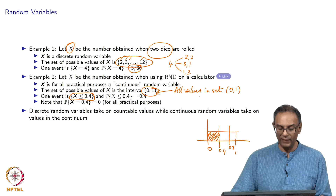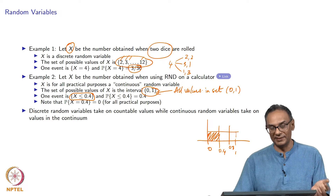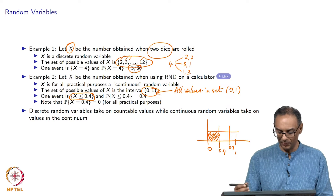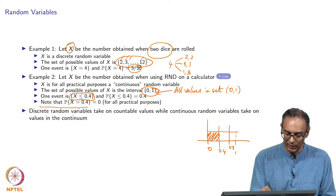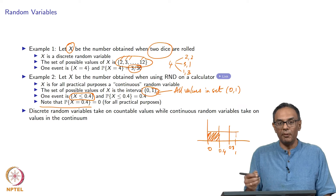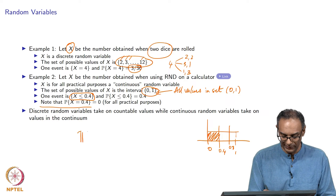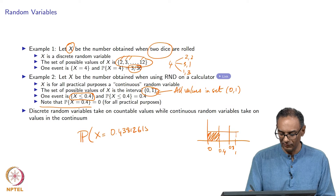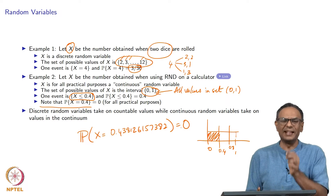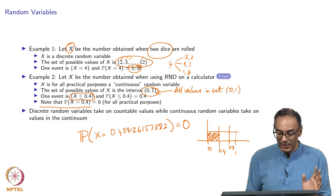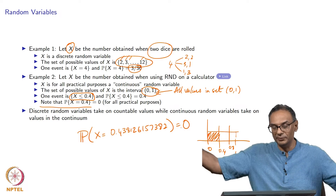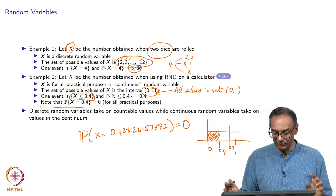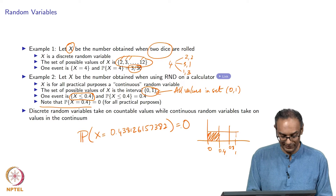An important feature of a continuous random variable is that the probability that it takes on a single value is 0. For example, the probability that x will be exactly equal to 0.438126157382 is 0. The chance you will get exactly that number is practically 0. In fact, it will be exactly 0 if you allow it to take an infinite number of decimal places.